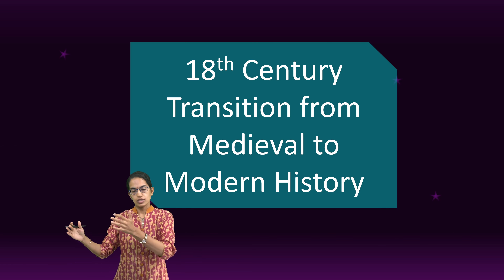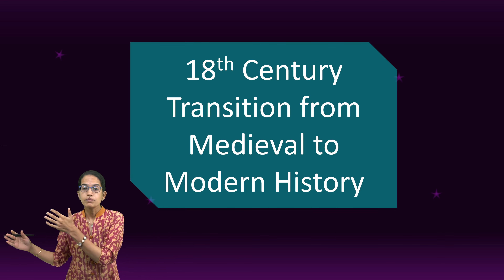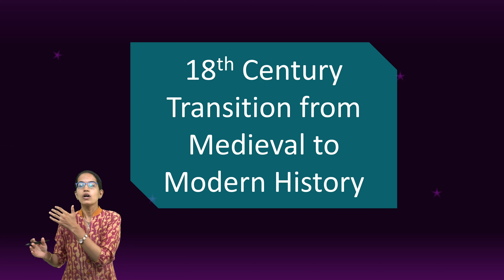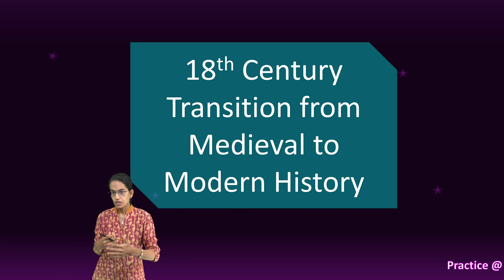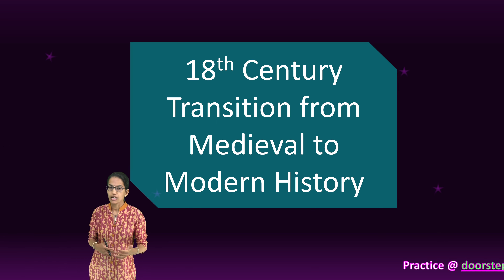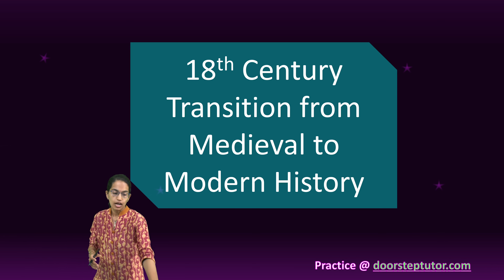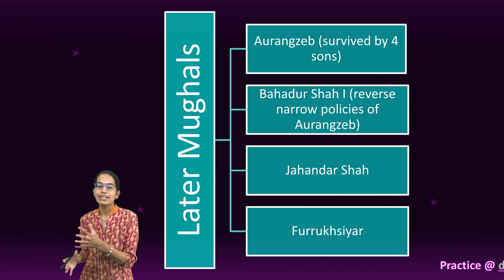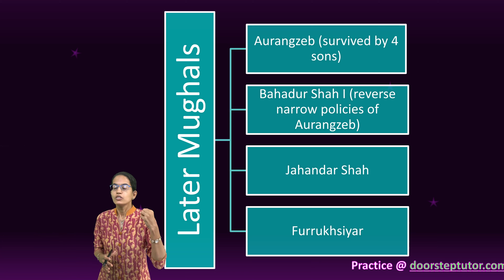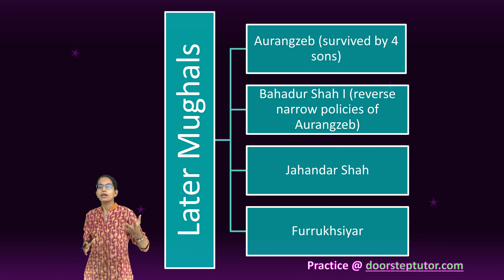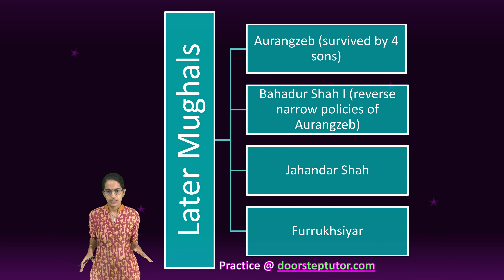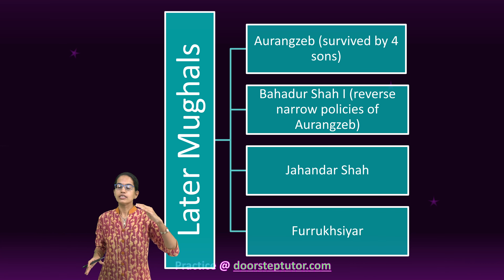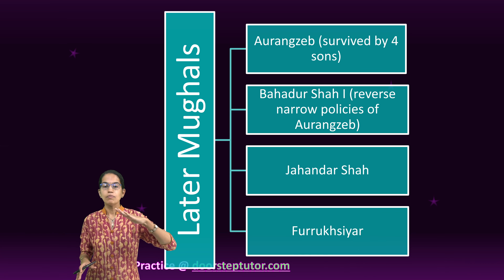After the Mughals, the last major ruler Aurangzeb was the one we had studied in our last classes. After Aurangzeb, there were four of his sons. His son Bahadur Shah I became the ruler.